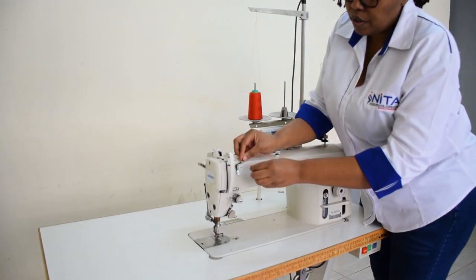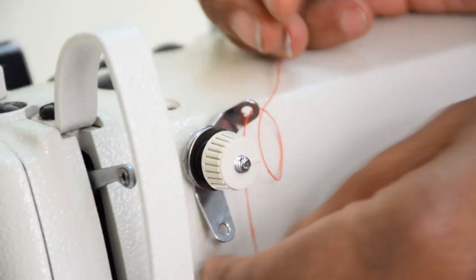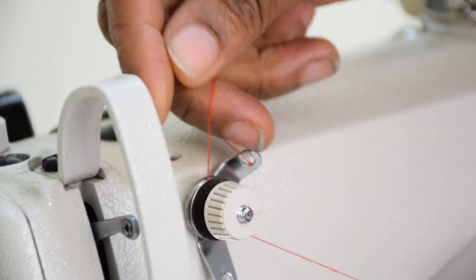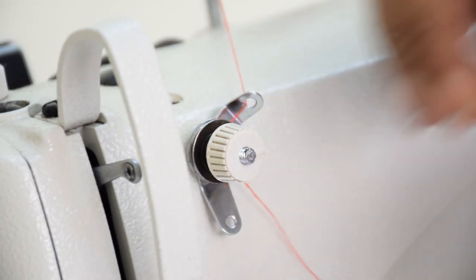Then onto the thread guide on the thread holder. Into the discs, ensure the thread goes in between, and onto the lower thread guide there.